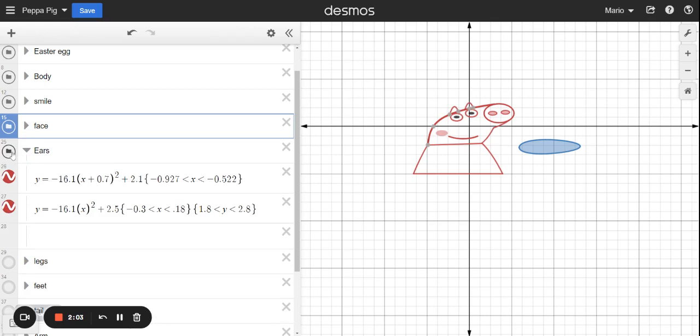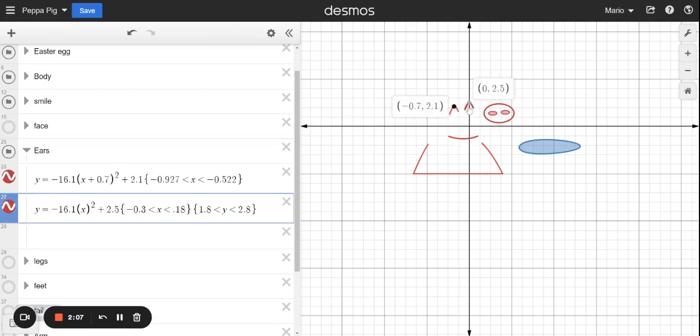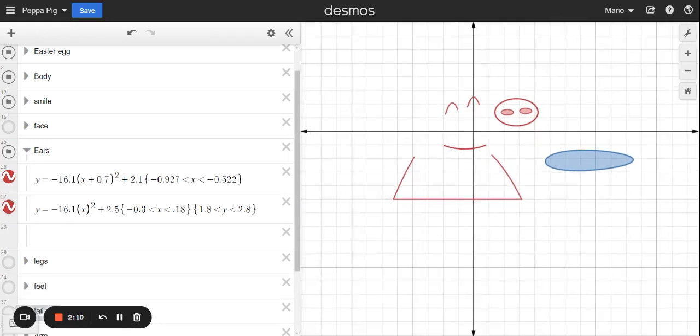Here are the ears. The ears are actually, let me hide this one. The ears are actually parabolas. So they're actually parabolas here. And all I did is I did a restriction on the domain. Domain and range.